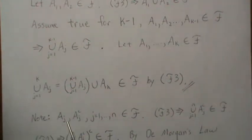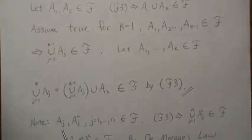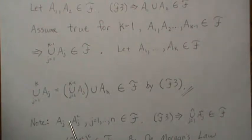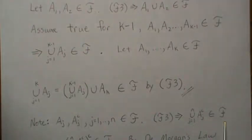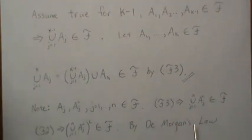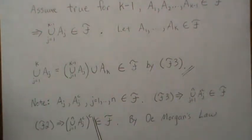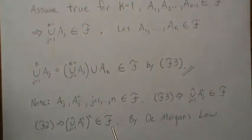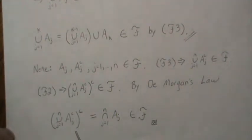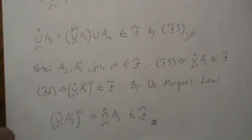To prove finite intersections: if AJ is in F, then AJ complement is in F by F2. We know their finite union is in F, so the union of all these complements is in F. By F2, the complement of that union is also in F. But by DeMorgan's law, the complement of the union of complements is the intersection of all the AJ's. So the finite intersection is in F — it's closed under intersections of a finite number of sets.